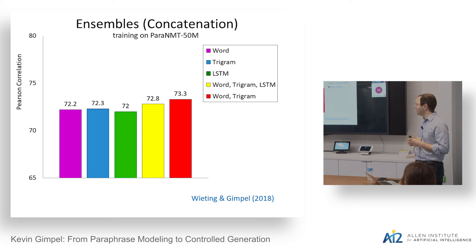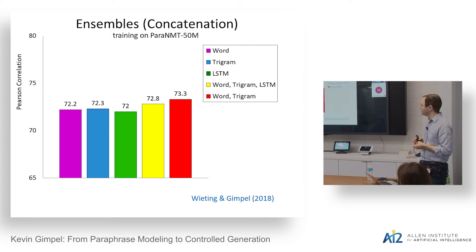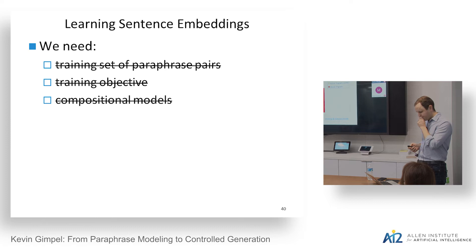When we compare these three model types trained on Para-NMT, the model architecture doesn't matter all that much individually. But they do seem to pick up different things. Concatenating word averaging and character trigram averaging into a single 'word+trigram' model yields stronger correlations than using individual models alone. We focus on this combined word+trigram model for the rest of our experiments.